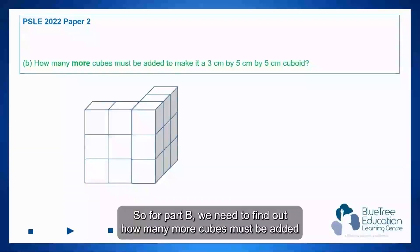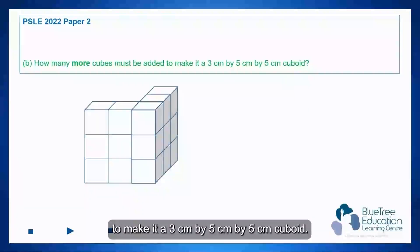So for part B, we need to find out how many more cubes must be added to make it a 3cm by 5cm by 5cm cuboid.